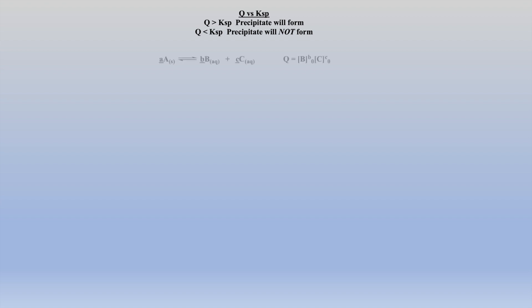Next, we should examine precipitation, which is the reverse of solvolysis. To predict if a precipitate will form, we will calculate a reaction quotient Q and compare it to the known Ksp. If Q is greater than Ksp, then a precipitate will form, which will be important with future problem-solving strategies. This comparison will only indicate if a precipitate will form. Later, we will demonstrate how to calculate the concentrations of ions in the resulting solution after a precipitate has formed.